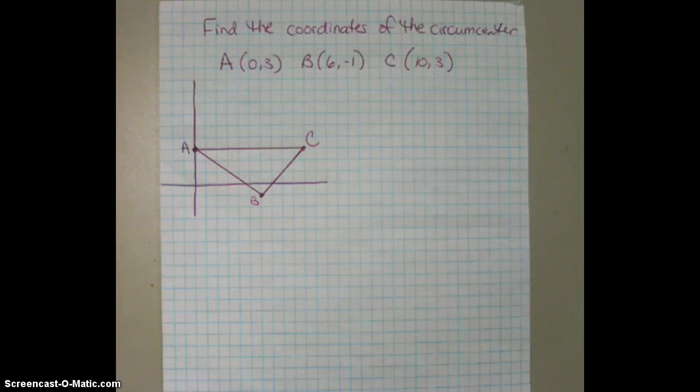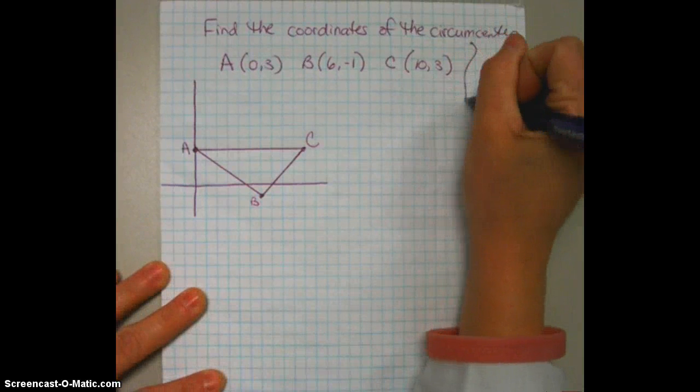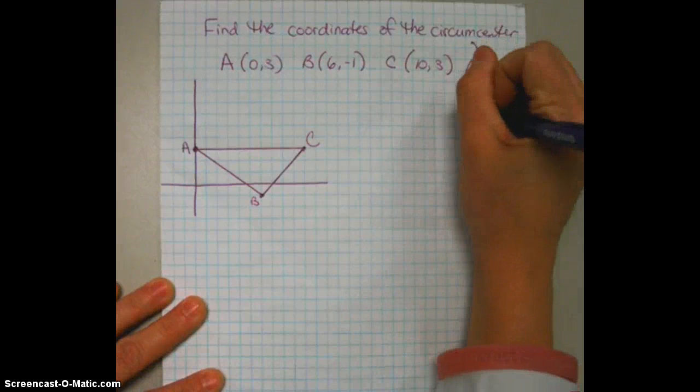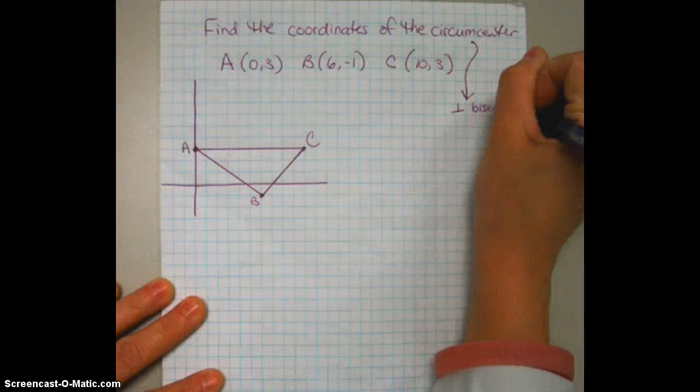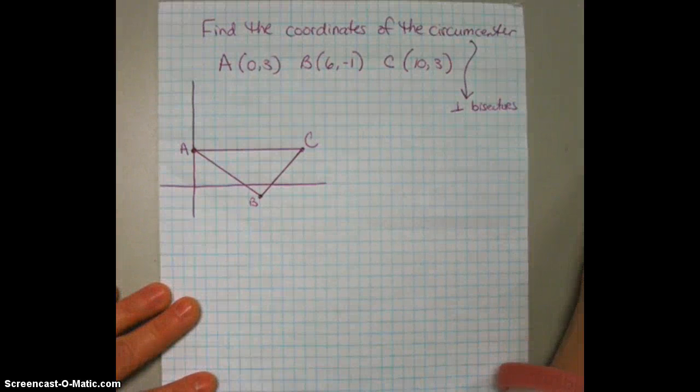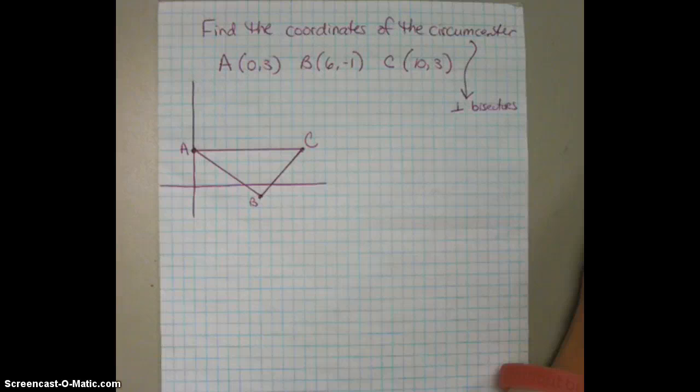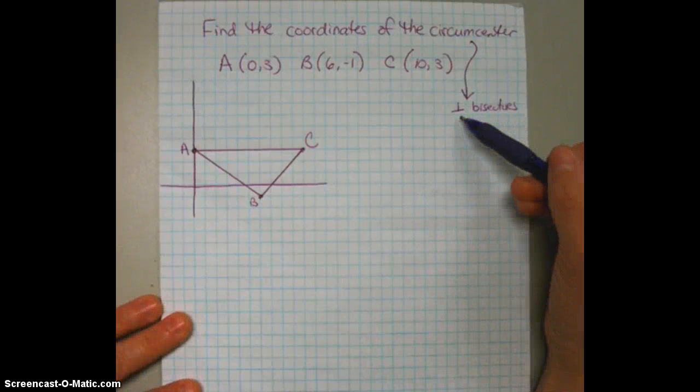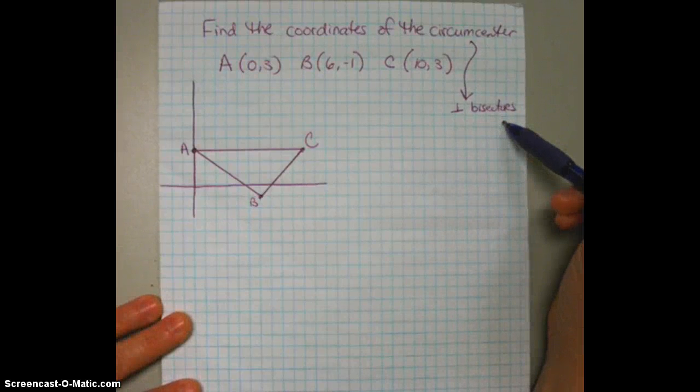Now, we have to remember what circumcenter is. Remember that the circumcenter is the point of concurrency with the perpendicular bisectors. So if I'm looking to find the coordinates of the circumcenter, I need to deal with two pieces of information.